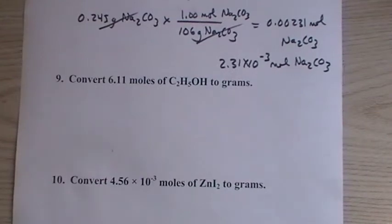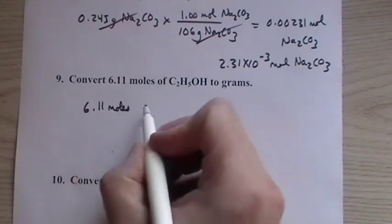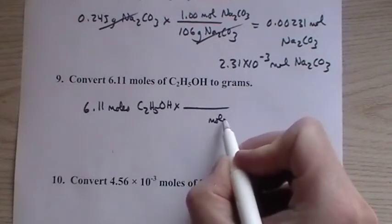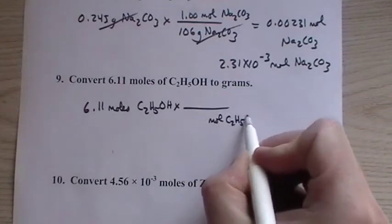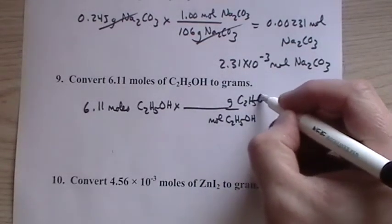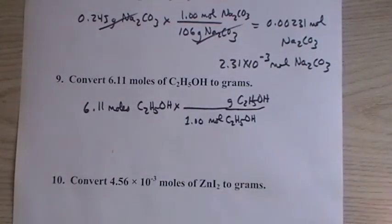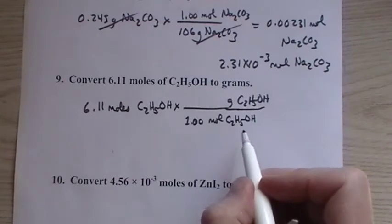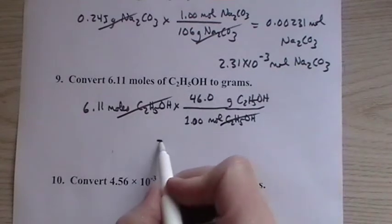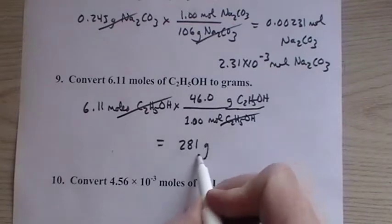Now we're going to convert back. We have moles to grams. So we have 6.11 moles of ethanol. Moles have to be on the bottom and grams have to be on top. We're still using the molar mass, just flipping that conversion factor. One mole of ethanol is 46.0 grams ethanol. This comes up to be 281 grams of ethanol.